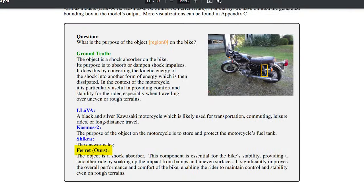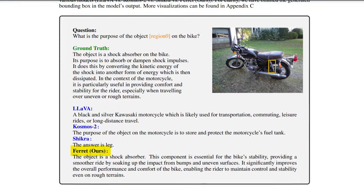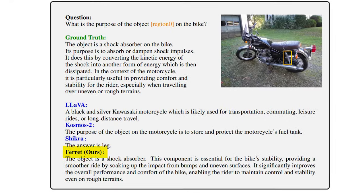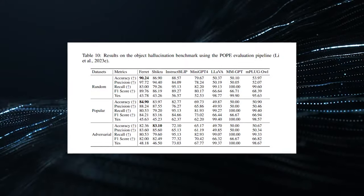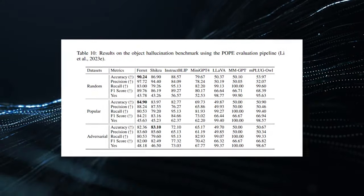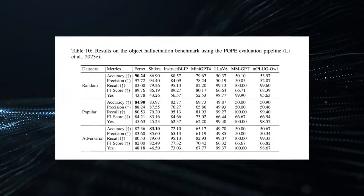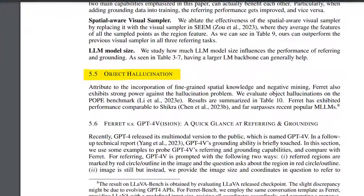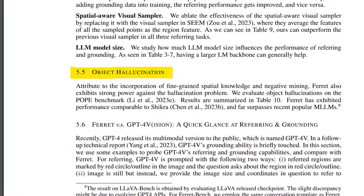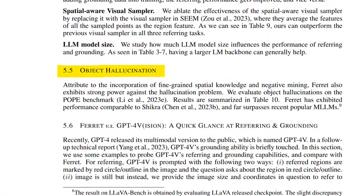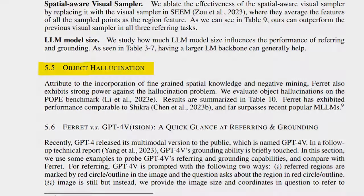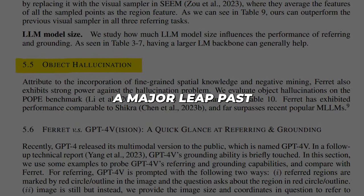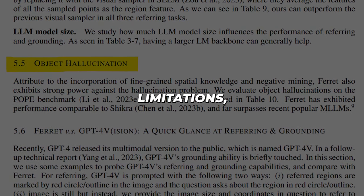And the proof is in the pudding. As per benchmarks, Ferret dominates at referring and grounding tasks needing spatial coordination. Moreover, assessments showed Ferret has a radically enhanced capacity for describing fine-grained image particulars compared to predecessors. Additionally, Ferret largely overcomes the common pitfall of object hallucination that plagues other generative models, taking a major leap past existing limitations by more accurately rendering visual contexts.